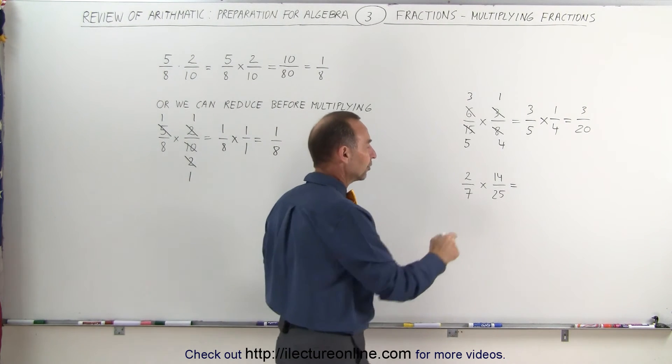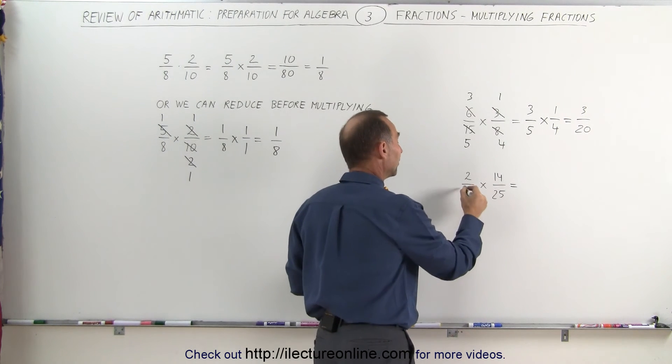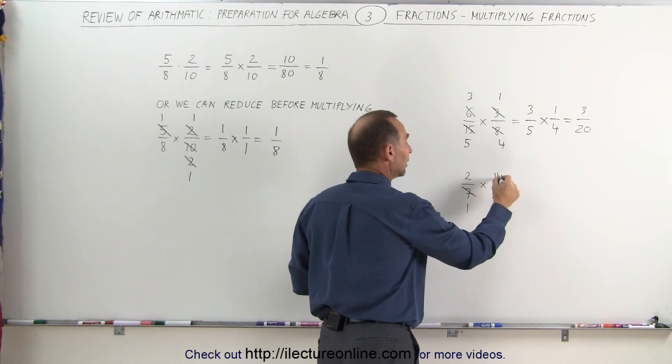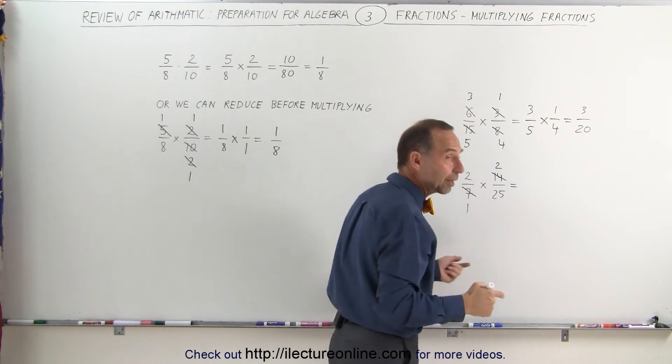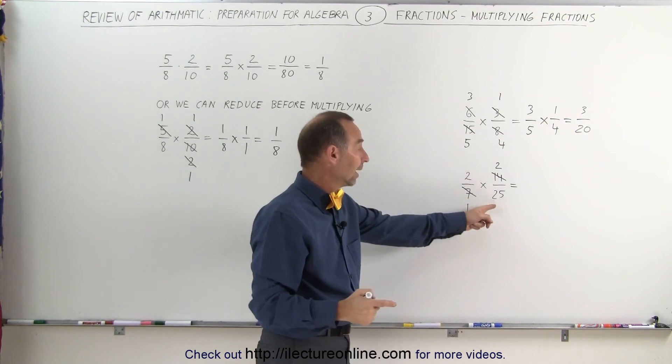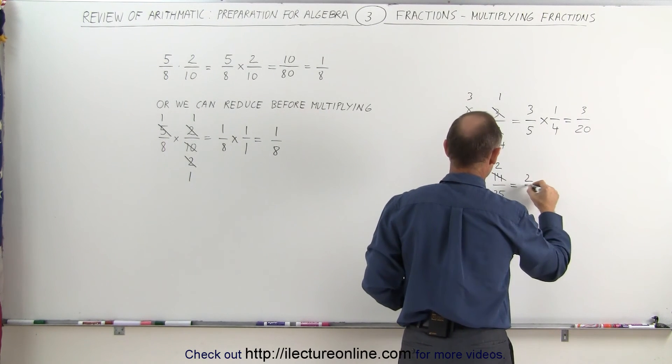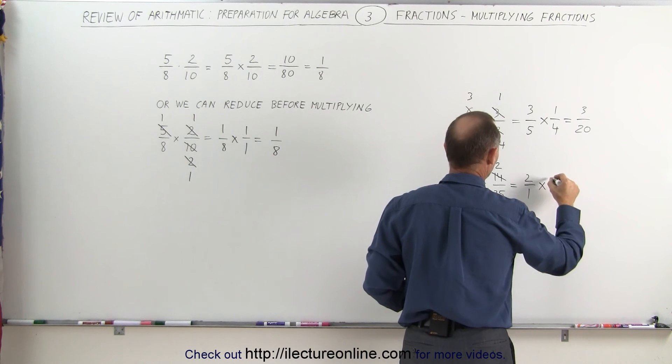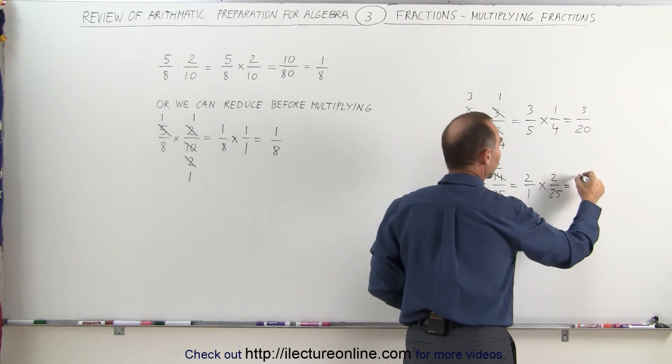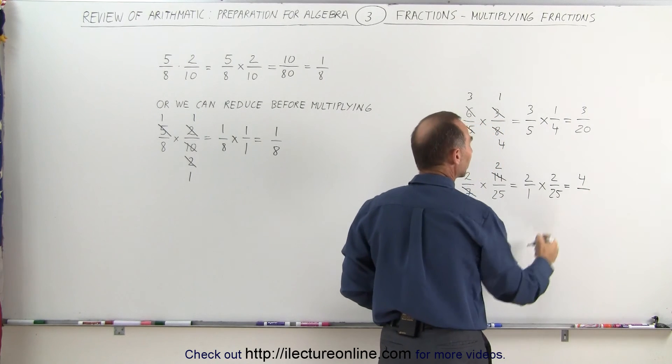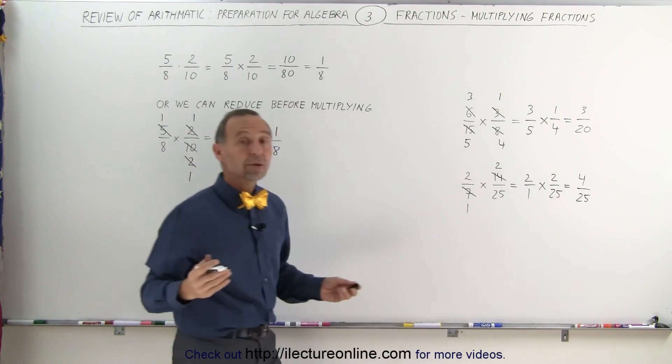Same over here. Notice that the 7 and the 14 can both be reduced. The 7 divided by 7 is 1. The 14 divided by 7 is equal to 2. The 2 and the 25 cannot be reduced because that's an even number and that's an odd number. So what we have left is 2 divided by 1 multiplied times 2 divided by 25. Again, we multiply the numerators together, we get 4. We multiply the denominators together, we get 25. And that's how we multiply fractions.